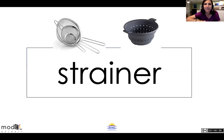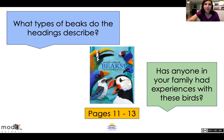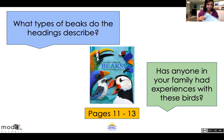Take a look at that word 'strainer.' I provided some pictures. Strainers allow the separation of solid and liquid — so when you wash your fruit, all of the dirty water goes out of the strainer; if you drain your pasta, the same thing happens. Now let's take a look at that blue box: What types of beaks do the headings describe? We're going to look at pages 11, 12, and 13 to answer that.